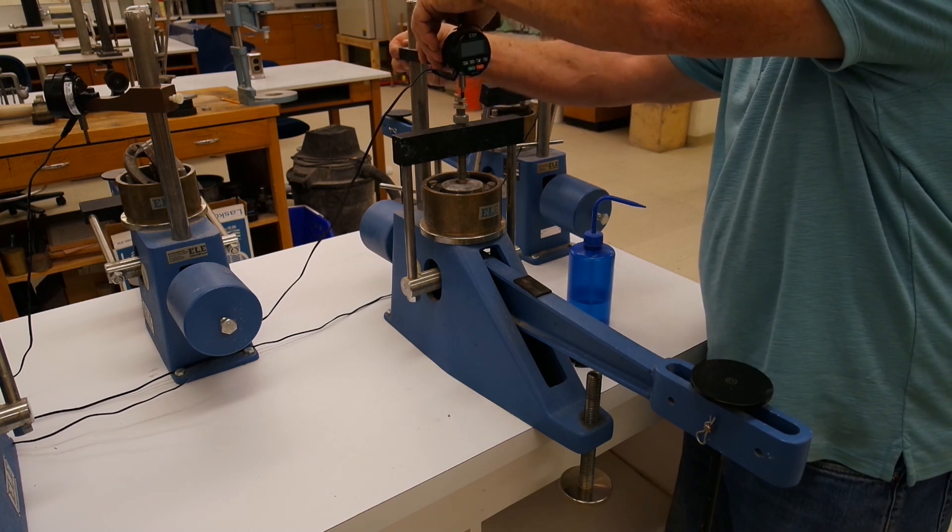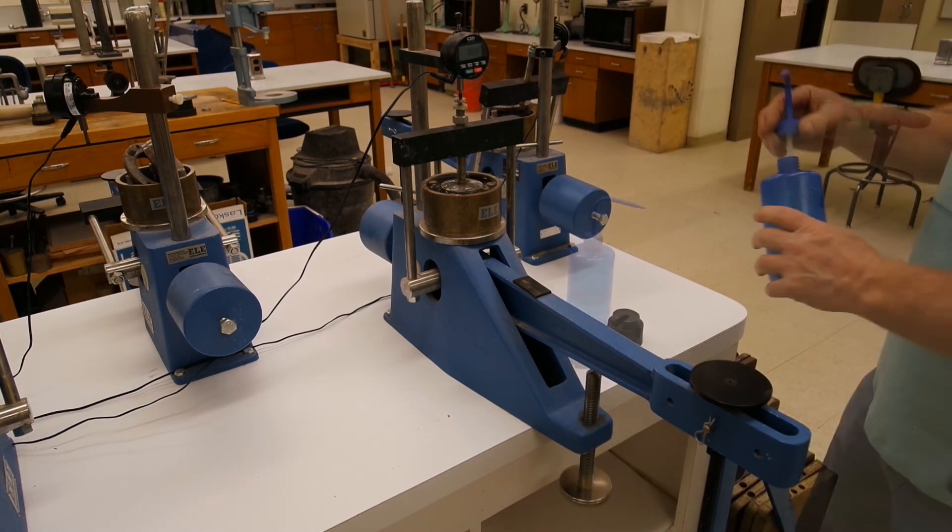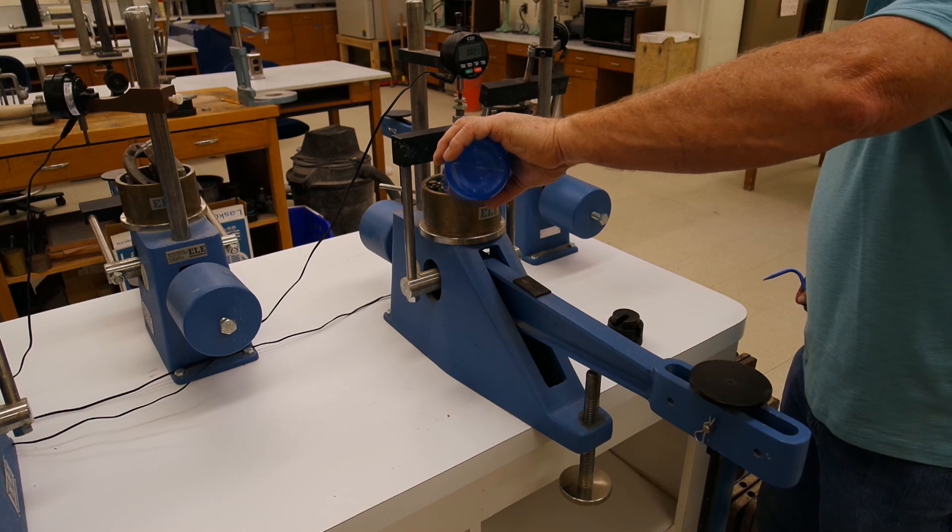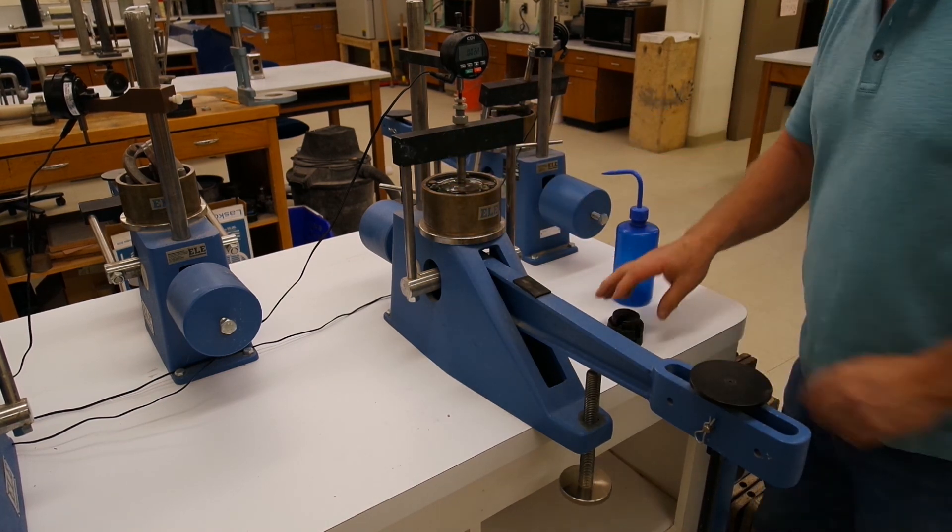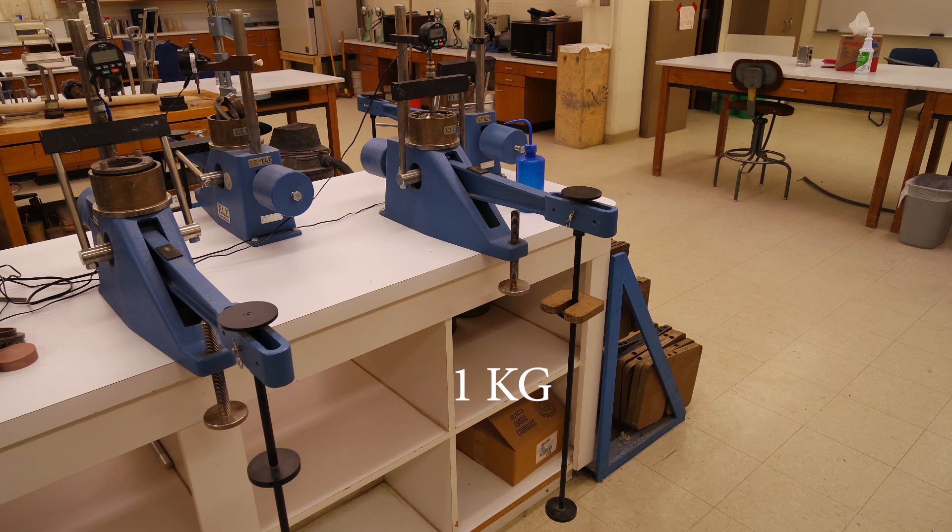We are now ready to start our test. Apply a seating load of 2.2 pounds to your sample. After 20 to 30 minutes we will take a reading on our digital gauge. This will be your initial value.